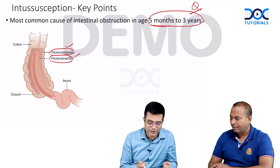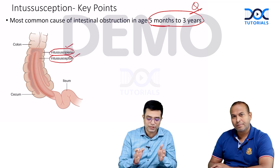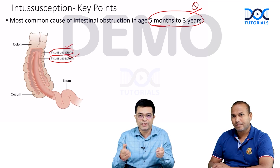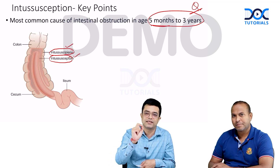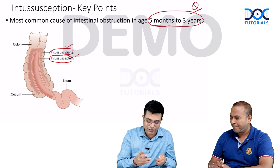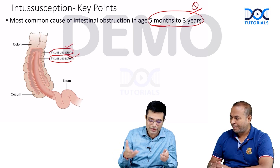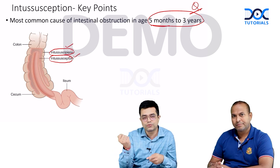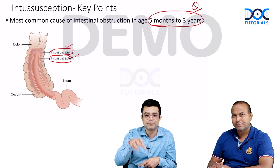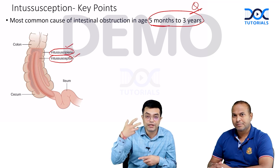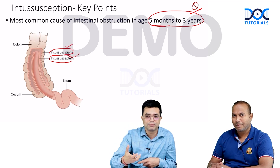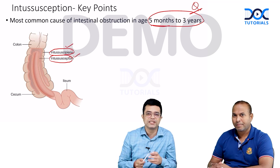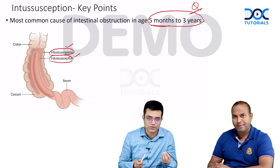There is always confusion between these two terms. Remember that the intussuscipiens is the receiving part, whereas the inside moving part is the intussusceptum. When the part invaginates inside, it pulls the mesentery along with it, causing compression of blood vessels, venous engorgement, and sloughing of the mucosa — producing the typical red currant jelly stools.